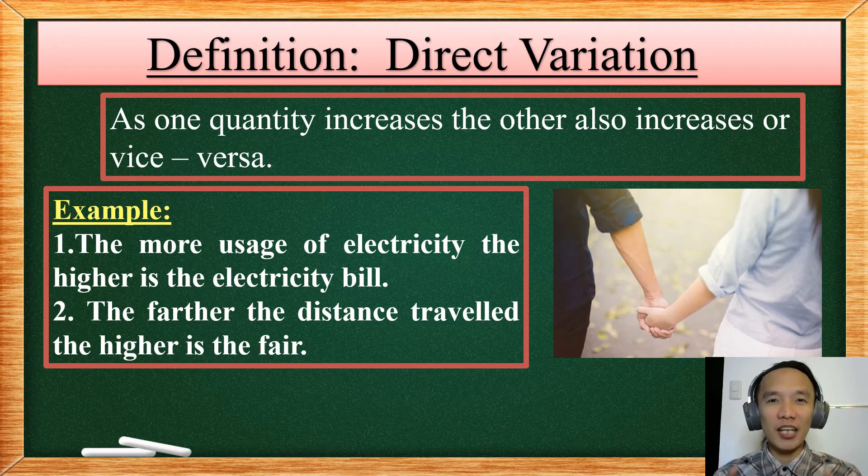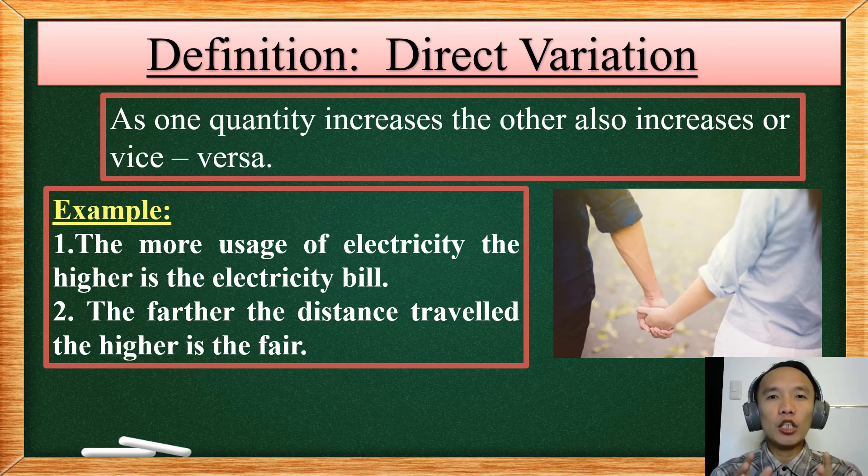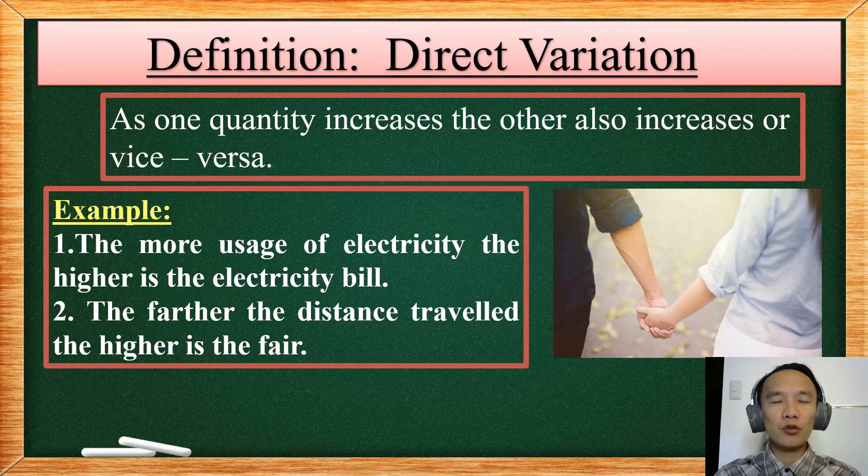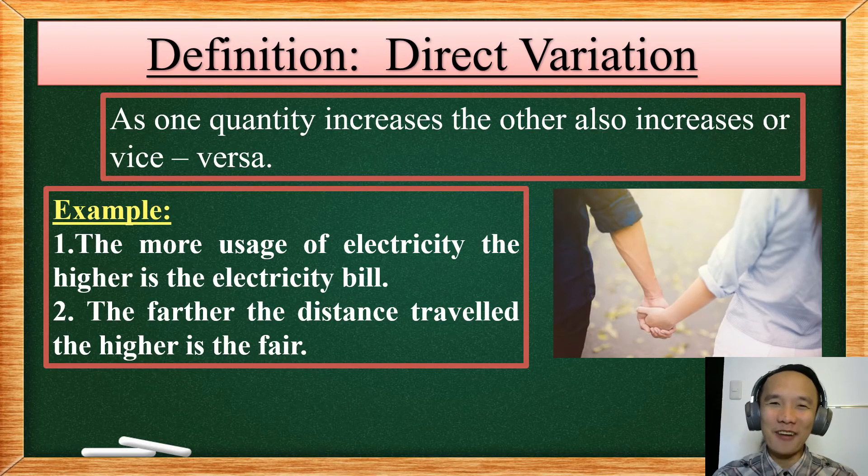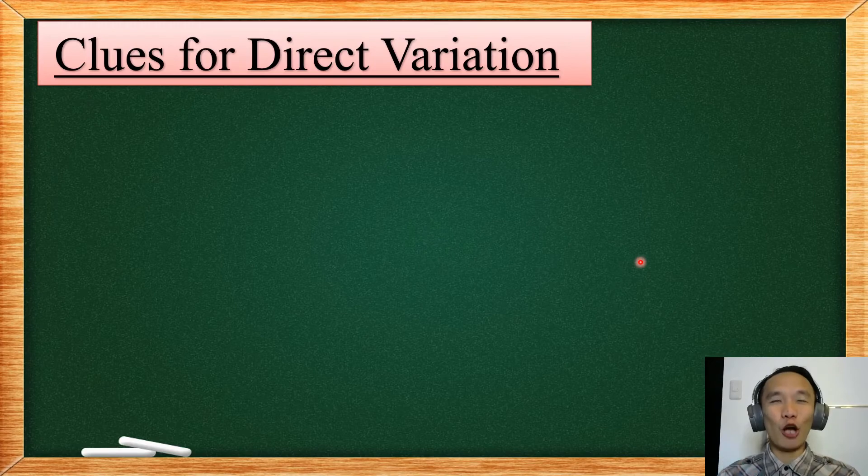Now to relate direct variation with a love story, direct variation is like a sweet love. Why is it a sweet love? It's like your first month together being a couple. You don't want to be separated. So if your lover goes to one place, you want to go together. So that is the relationship with a direct variation and the love story.